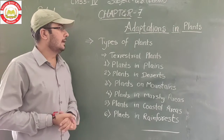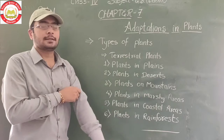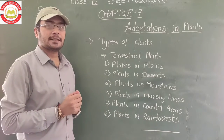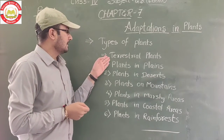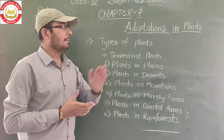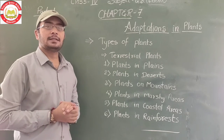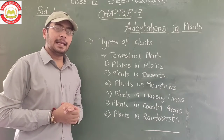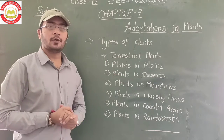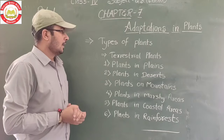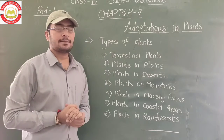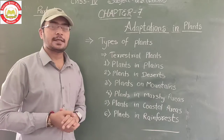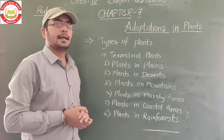In this part, we learn about the types of plants — how many types of plants are found around us. We also learn about terrestrial plants, which are plants that grow on land. There are six types of terrestrial plants found around us.